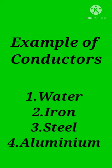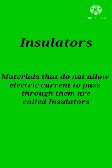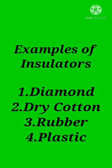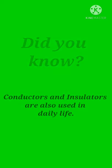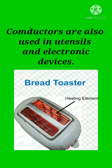iron, steel, aluminum. Insulators: materials that do not allow electric current to pass through them are called insulators. Examples of insulators: diamond, dry cotton, rubber, plastic.